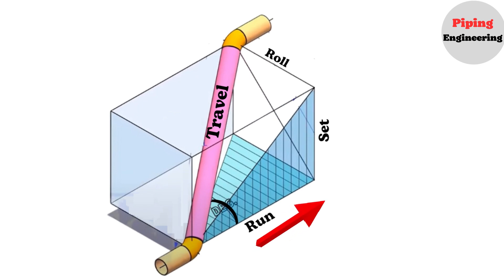The eastward movement is known as the run. The upward movement is called the set. And the northward movement is referred to as the roll.